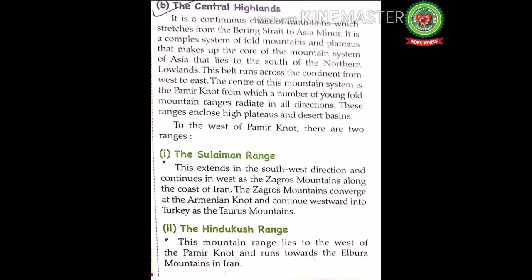To the west of the Pamir Knot there are two ranges. The Suleiman Range extends in the southwest direction and continues westward as the Zagros mountains along the coast of Iran. The Zagros mountains converge at the Armenian Knot and continue westward into Turkey as the Taurus mountains. The Hindukush Range lies to the west of the Pamir Knot and runs towards the Alborz mountains in Iran.